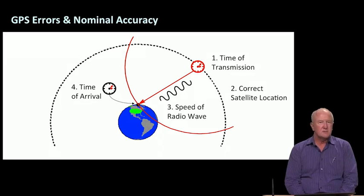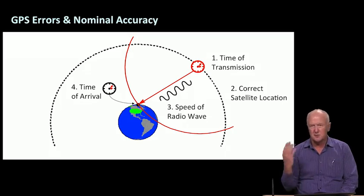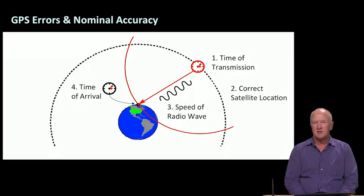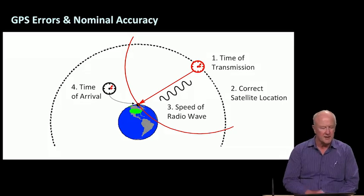And we talk about nominal accuracy. By nominal accuracy, we mean that all four of those functions are going reasonably well. They're in their usual state. Time of transmission is being controlled to about a billionth of a second. Satellite location is being estimated and transmitted to better than a meter. The speed of the wave might have some error in it, but that error results only in about a one meter error in the measurement of range. The time of arrival is being made within a nanosecond or so.